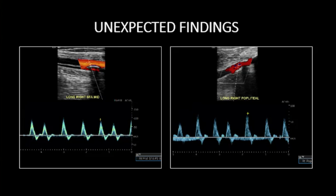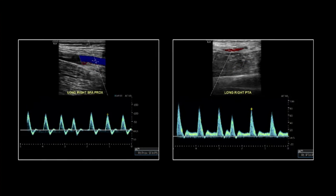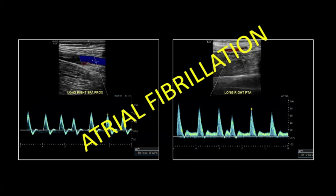I encourage you to keep alert for unexpected non-arterial findings on spectral doppler imaging. This was an extremity arterial duplex exam with clinical indication of claudication. Notice the irregularly irregular intervals between each waveform at each interrogated arterial segment — no one segment displays a similar waveform interval. This is atrial fibrillation, which I confirmed when I called in the finding. The patient was known to have AFib but was thought to be back in sinus rhythm, so the finding on this exam prompted additional evaluation and management.